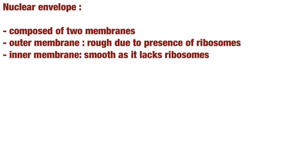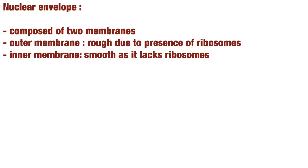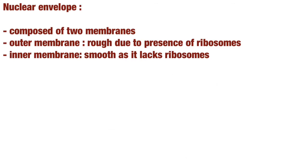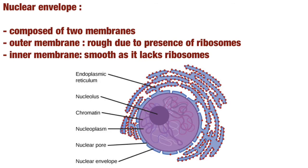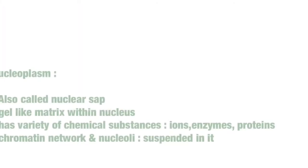The nuclear envelope is composed of two membranes. The outer membrane is rough while the inner membrane is smooth. The outer membrane has ribosomes present on it, while the inner membrane lacks ribosomes.